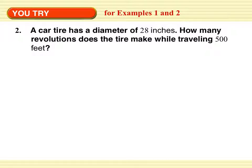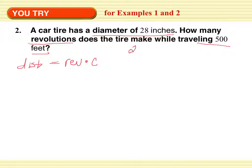A car tire has a diameter of 28 inches. How many revolutions does the tire make while traveling 500 feet? We have distance traveled equals number of revolutions times circumference. But we have inches and feet, so the first thing I'm going to do is convert: 28 inches divided by 12 will give me 2.3 feet. Push pause and try.